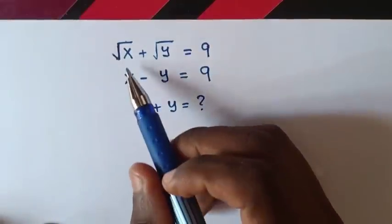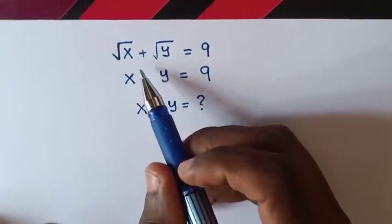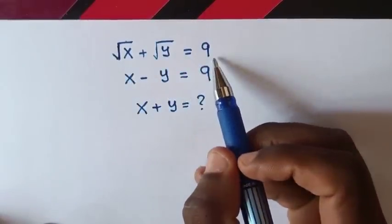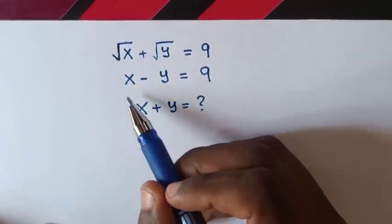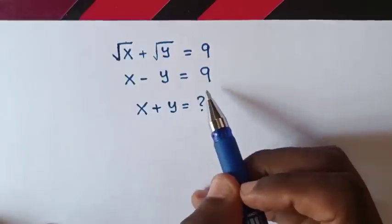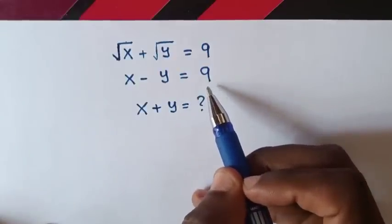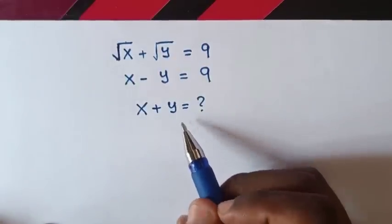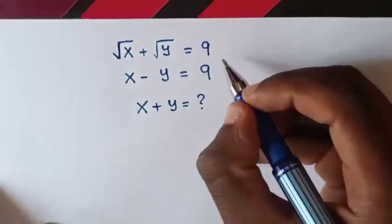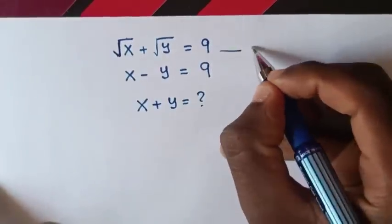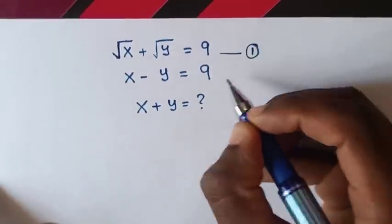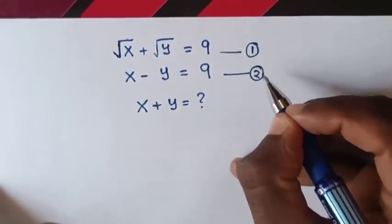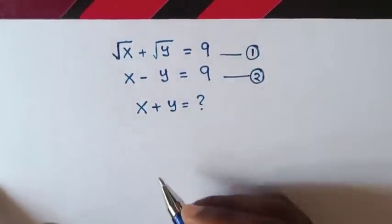Hello. How to solve: square root of x plus square root of y equals 9, and x minus y equals 9, to find the value of x plus y. We'll call the first equation 1 and the second equation 2.